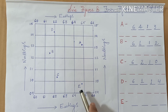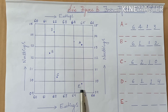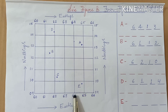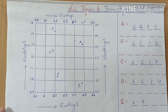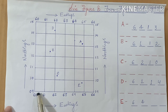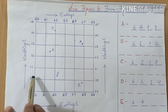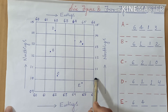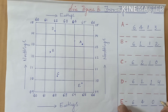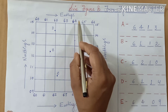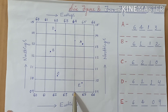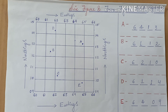Let us proceed to point E. Point E lies between eastings 64 and 65, so we take the lesser value — 64. For the northings, they are between 9 and 10, so the lesser value is 9. The four figure grid reference for station E is 6409. This is how we calculate the four figure grid reference to locate a place on a topographical map.